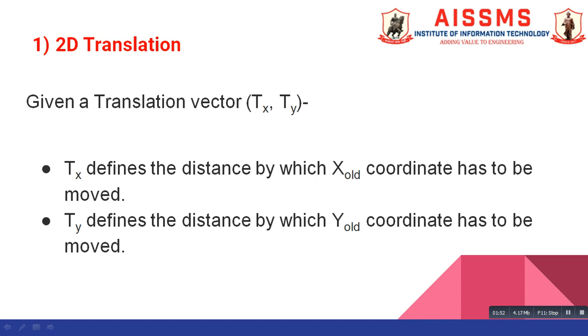Translation vector TX comma TY is given to us. TX defines the distance by which X old coordinate has to be moved. And TY defines the distance by which Y old coordinate has to be moved.